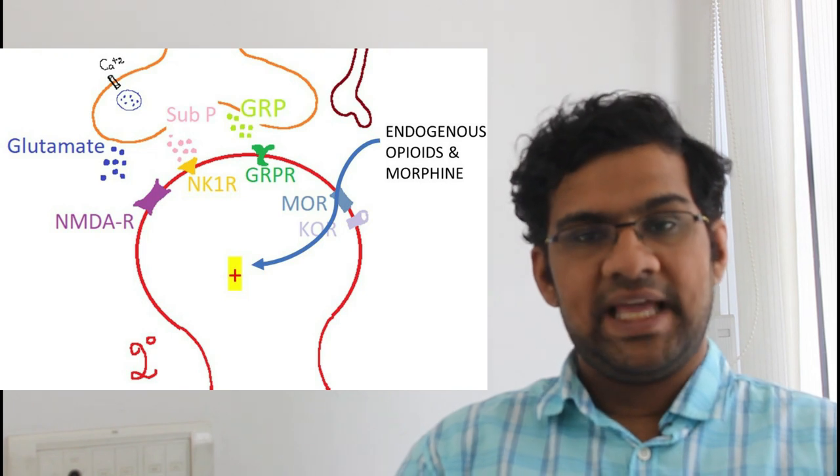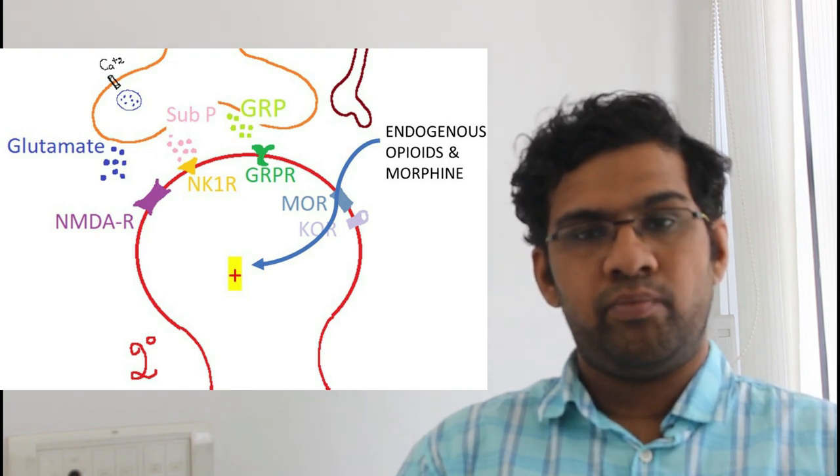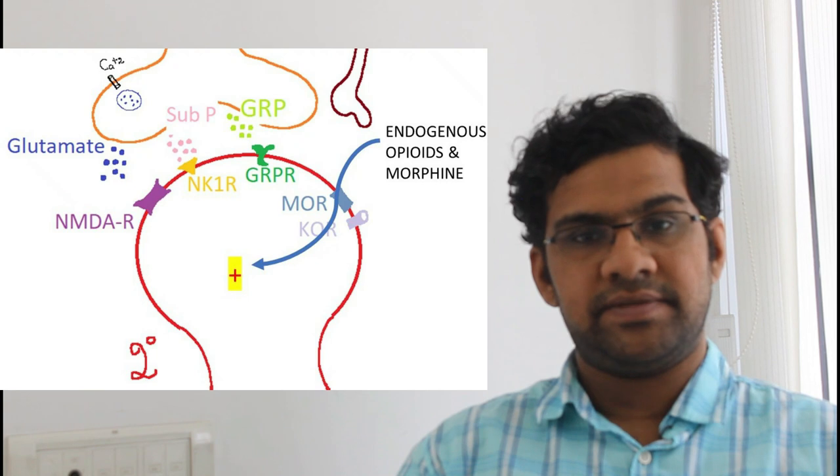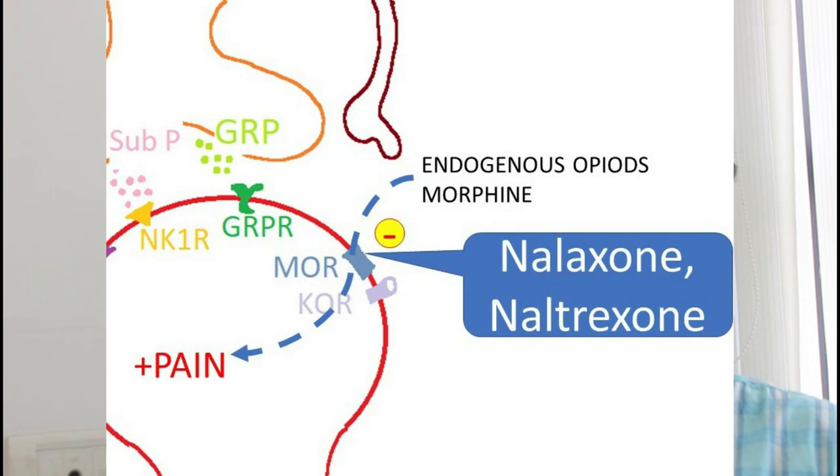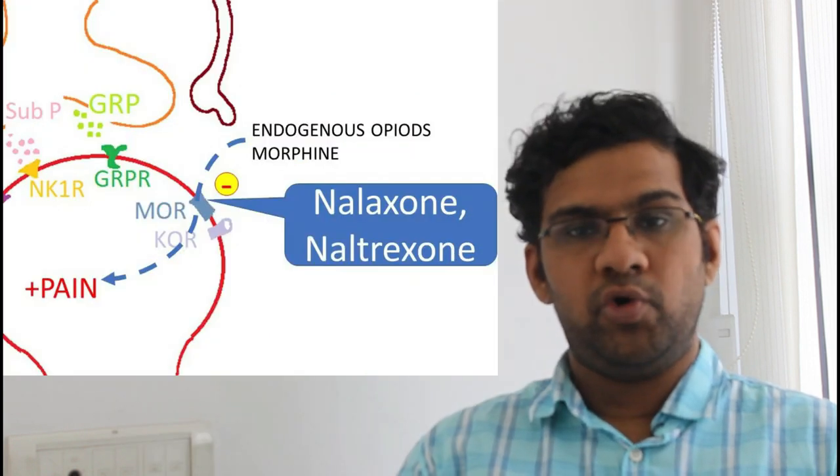They act mostly by mu opioid receptors which are present on the second degree neurons. So in these conditions, use of drugs like naloxone and naltrexone decreases the itch sensation by blocking the mu opioid receptors.